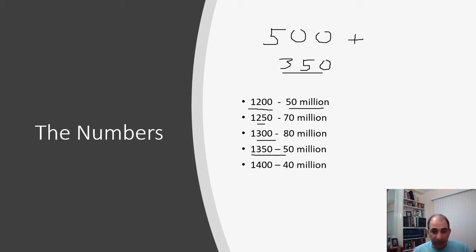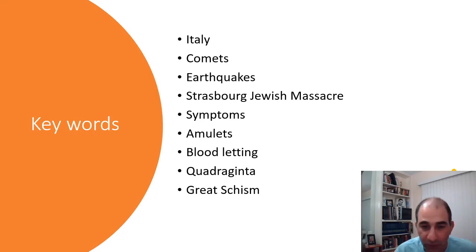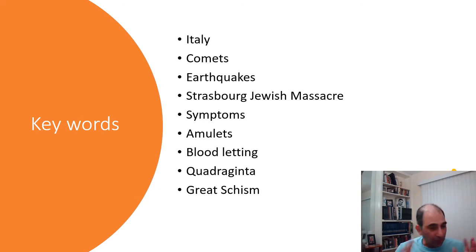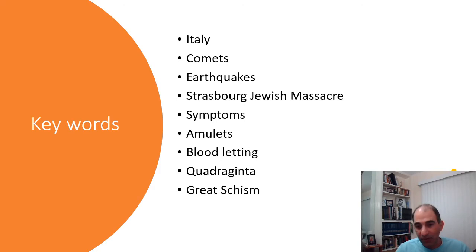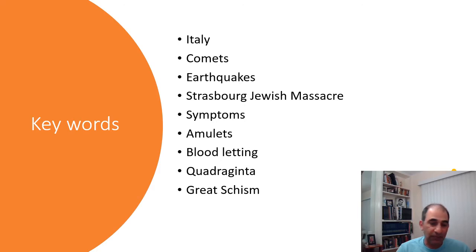So you get the numbers — a big, huge drop. Now a bit more background. You have some key words to get down. Write them all down, but also write them again as they come up in the narrative. I'm going to go to a map to talk about the first couple of these, and I'll bring the key words back up on another slide in just a couple of minutes.